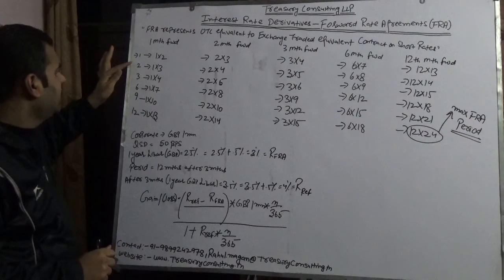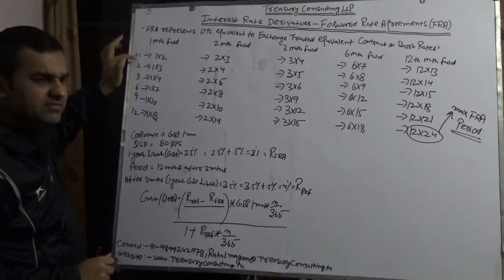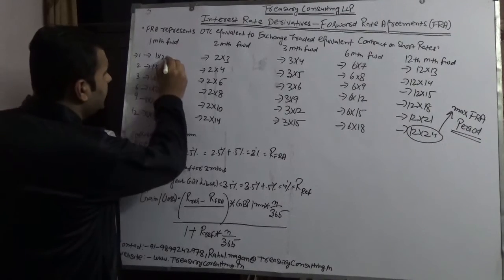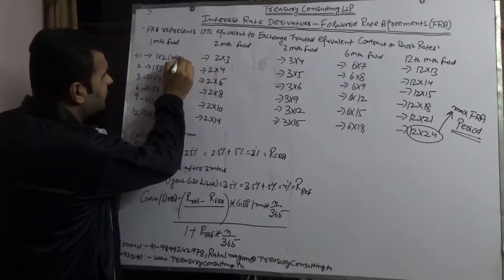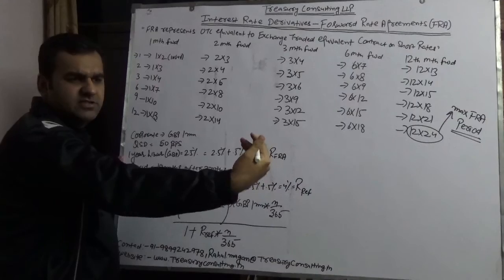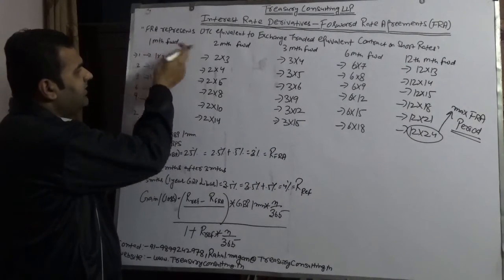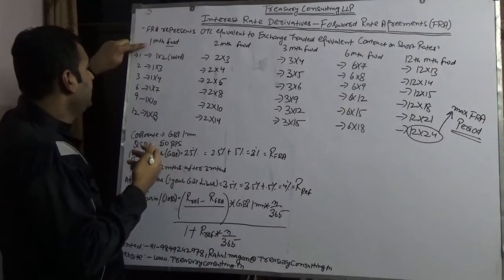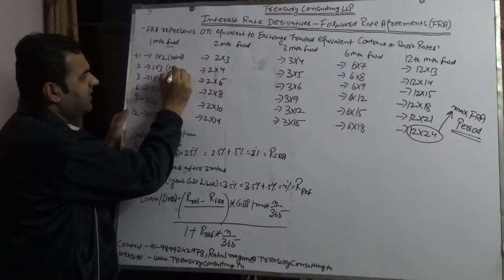The FRA specification uses notation like 1x2, 1x3, and so on. One-month forward for one month is written as 1x2, meaning it starts after one month for one month (1 + 1 = 2). One-month forward for two months is 1x3 (1 + 2 = 3).